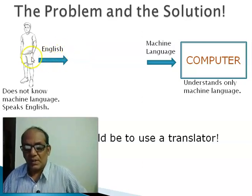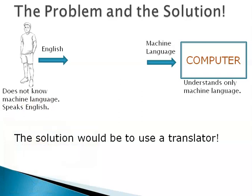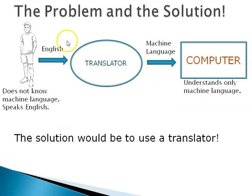That is the problem. There is a mismatch: computer understands machine language, humans speak English. What do we do then? The idea then would be to use a translator in between, as shown here. So this guy speaks in English, it is translated into machine language, and is fed to the computer.